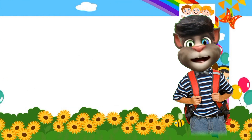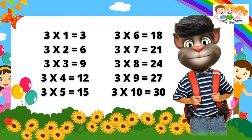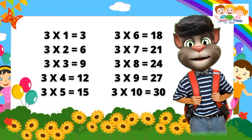Three ones are three. Three twos are six. Three threes are nine. Three fours are twelve. Three fives are fifteen. Three sixes are eighteen. Three sevens are twenty-one. Three eights are twenty-four. Three nines are twenty-seven. Three tens are thirty.